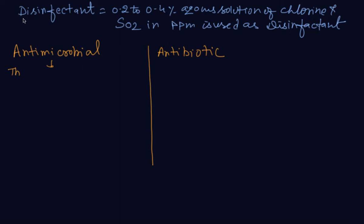In last class I forgot to tell you that one more disinfectant: 0.2 to 0.4% aqueous solution of chlorine is used as disinfectant in water to kill bacteria, and SO2 in parts per million concentration is also used as disinfectant. Now the next topic is antimicrobial and antibiotic.